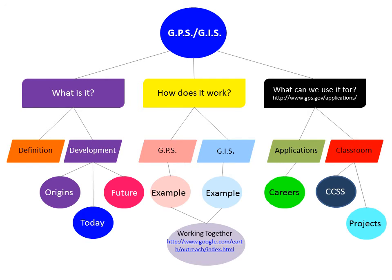My final group of subtopics begins under Development. I have Origins, Today, and Future. I chose purple again for Origins, same concept of history. For Today, I think of GPS and GIS and the world, so I chose blue. For Future, I chose pink because it's more vibrant and I think as technology grows these systems will be used in more ways.